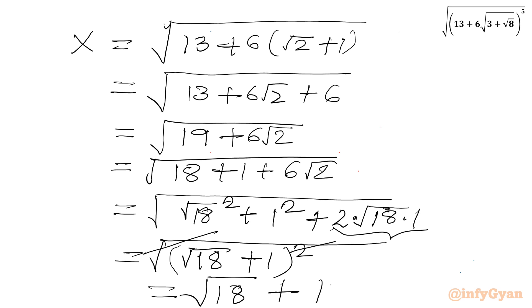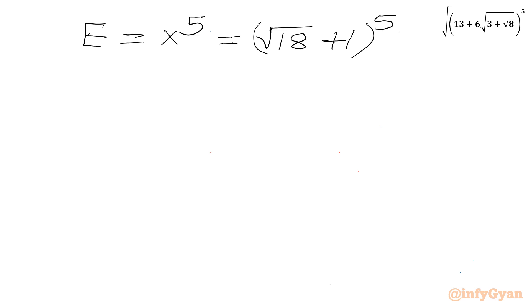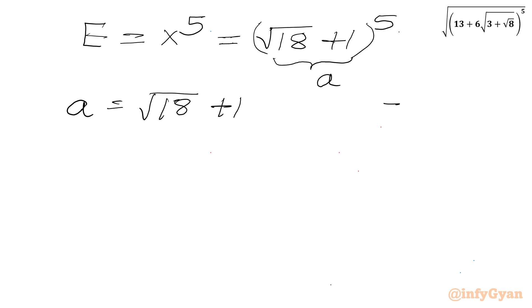Now we have to find our expression e equal to x to the power 5, which is (√18 + 1)^5. Let me call this bracket a, so we have to find a^5. So a equals √18 + 1, and our expression is a^5.